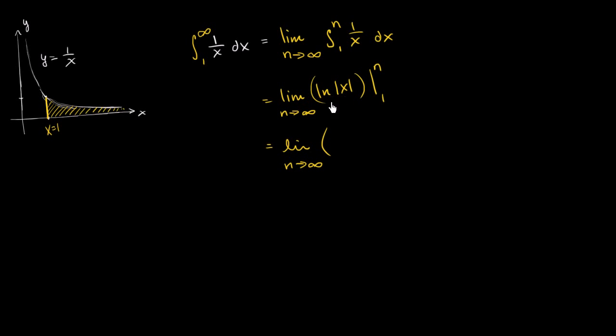You evaluate this at n. So you're going to get the natural log. I could write the absolute value of n, but we know that n is going to be positive. So we could just write the natural log of n minus the natural log of the absolute value of 1 or the natural log of 1. Natural log of 1 is just 0. e to the 0th power is equal to 1. So this boils down to the limit as n approaches infinity of the natural log of n.